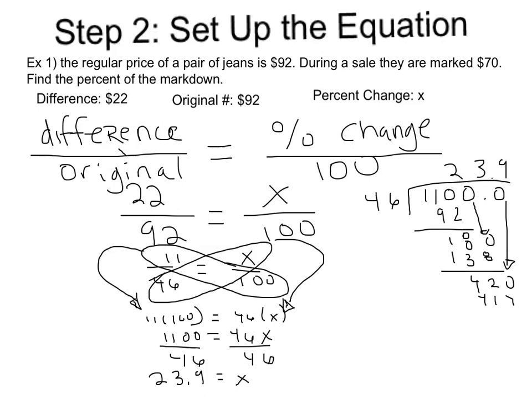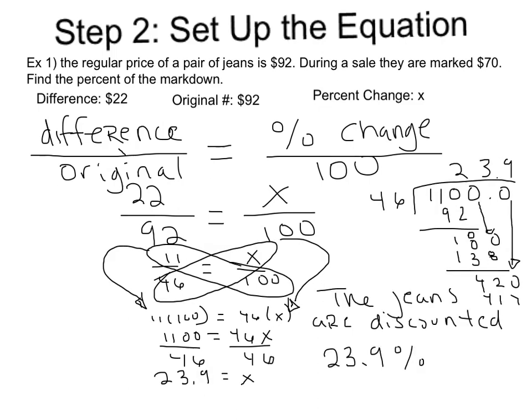We get X equals 23.9 or 23.9 equals X. We need to make sure that when we are answering the question, we are using the word discount or the word decrease to show that the price is going down. So here's our answer. The jeans are discounted 23.9 percent.